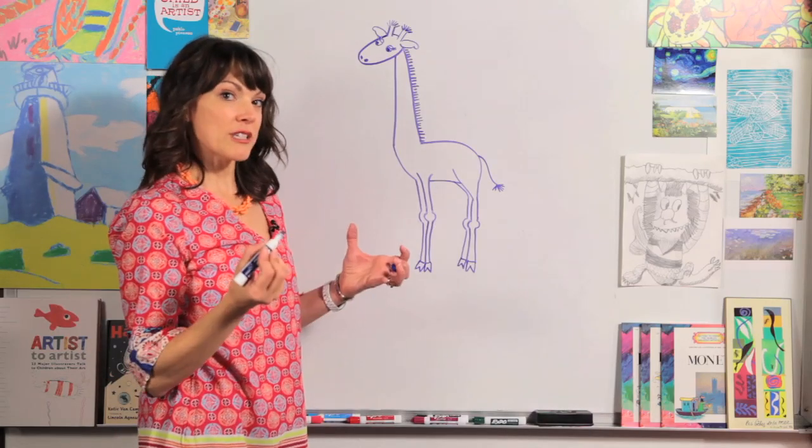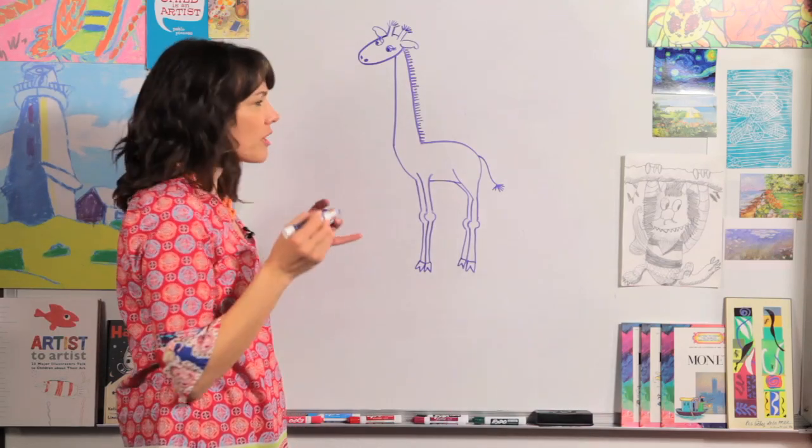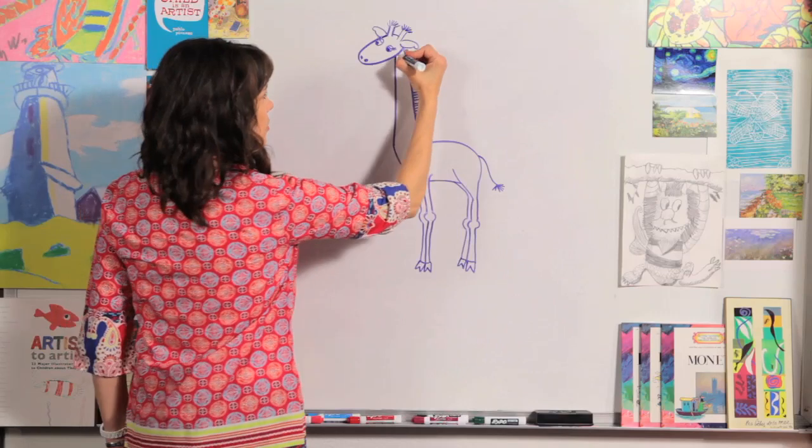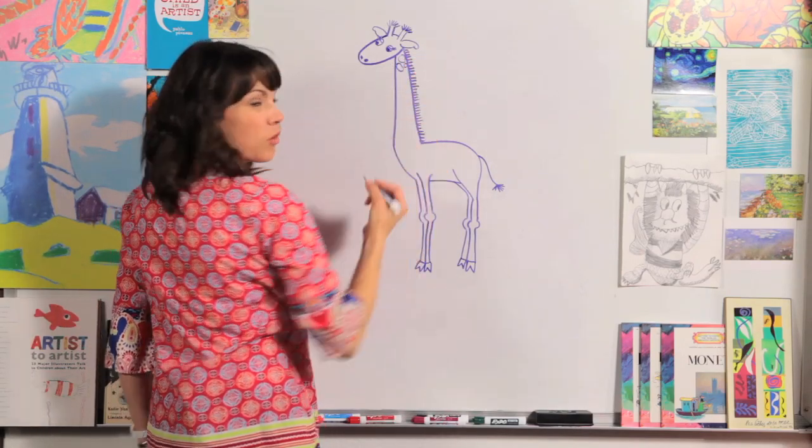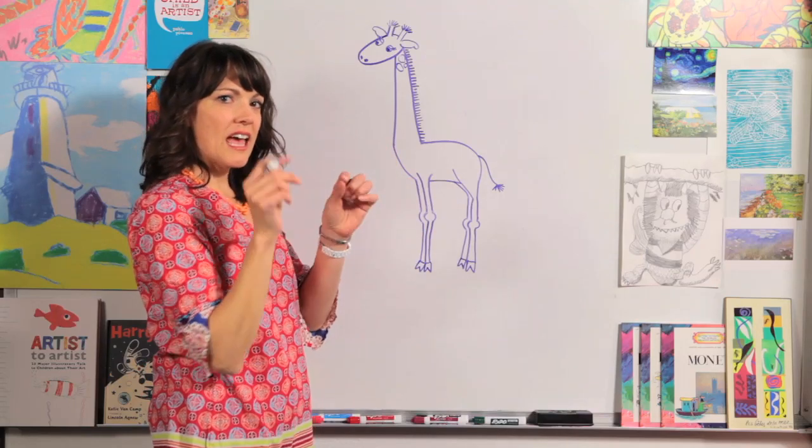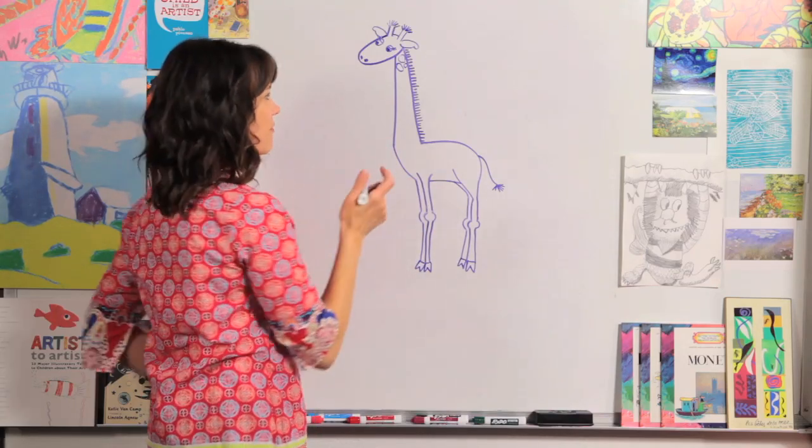Now you can draw round spots, or you can make them a little bit wiggly, and we're going to just go all the way down the neck. What I like to do is do some big, and then I'll fit in a small one. So watch me for a minute and see what I do.